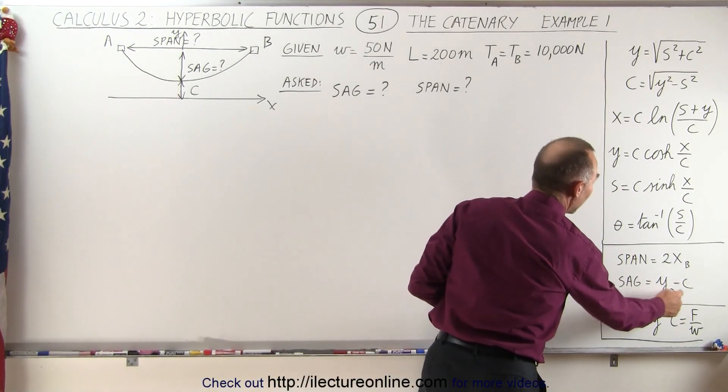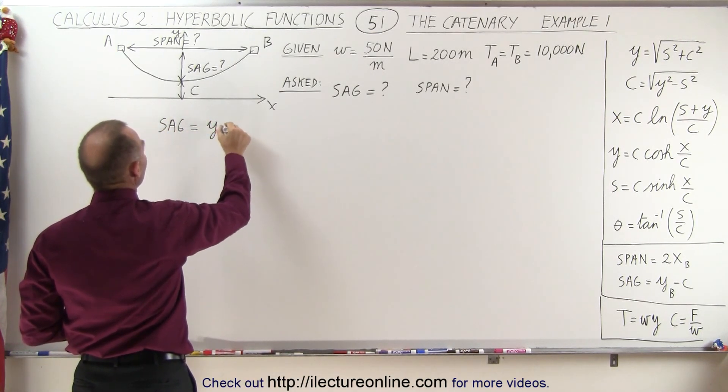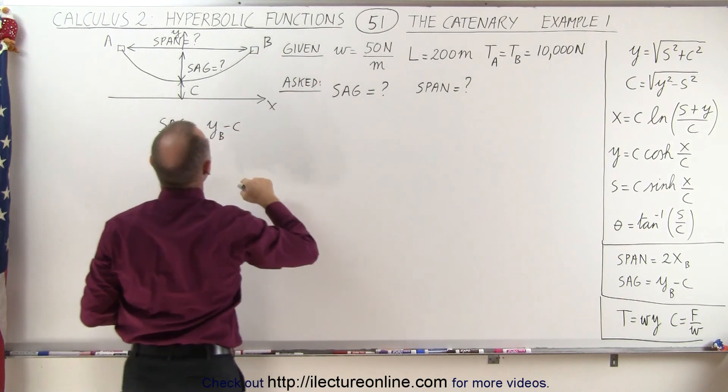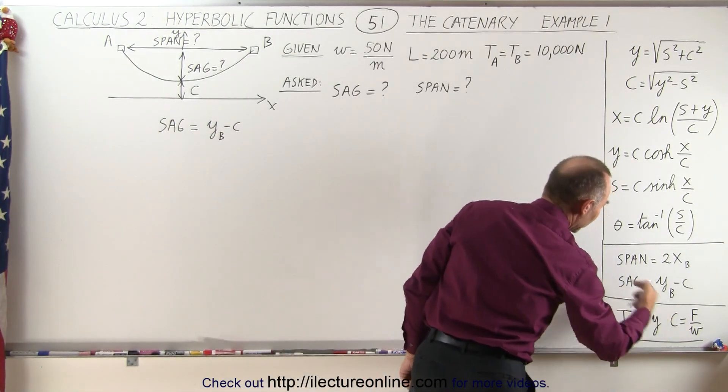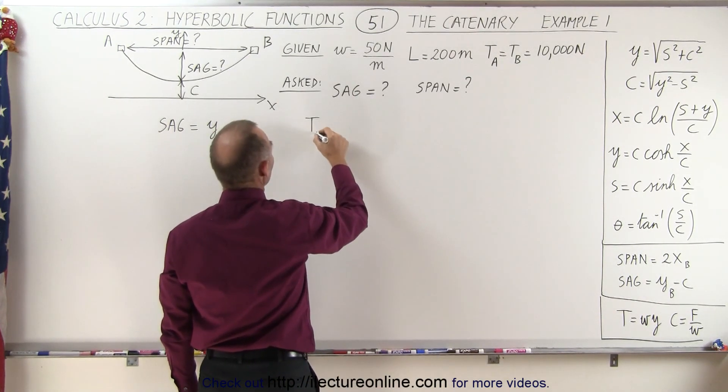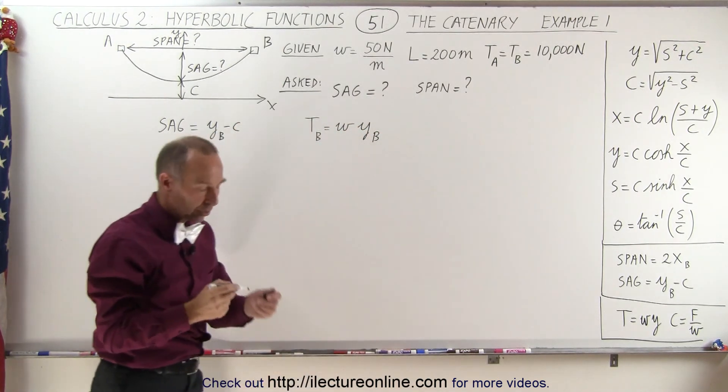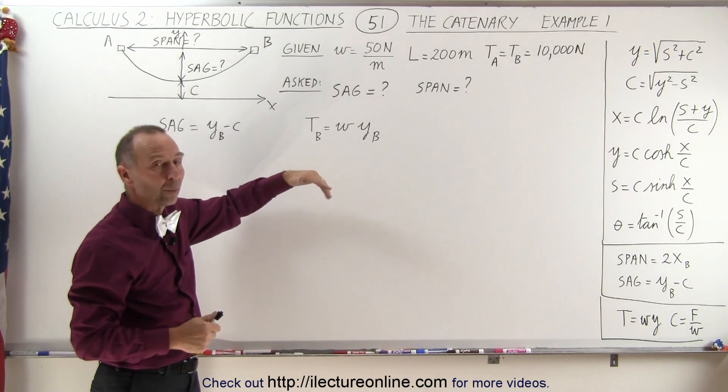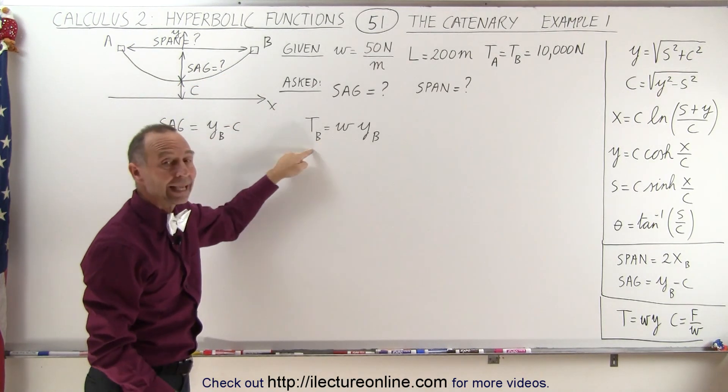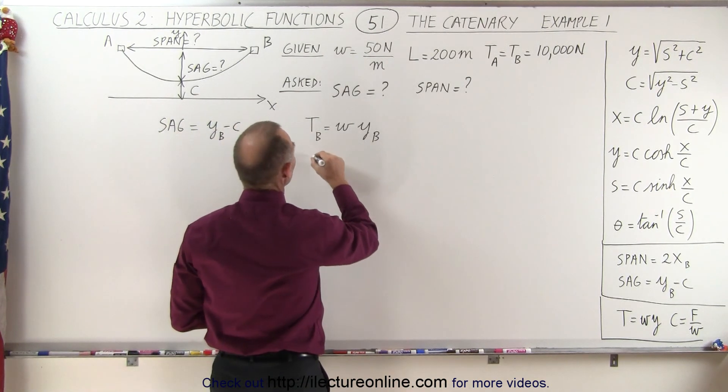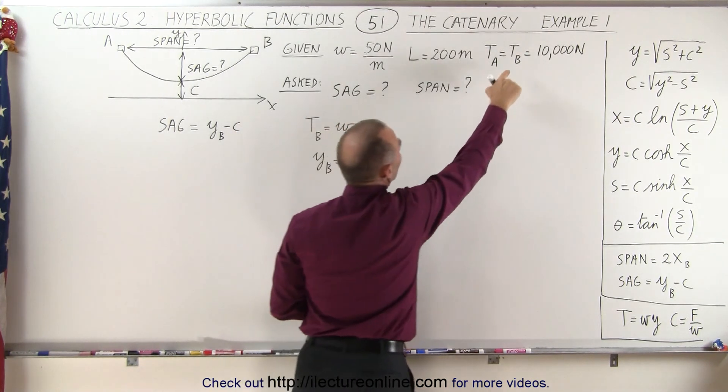So in order to find the sag, we need Y minus C. So we can say that sag is equal to Y at B minus C, which would be this distance right here, and so we're going to need C and we're going to need Y. Now over here we realize that Y can be obtained by using this equation, so we can say that T at B is equal to the weight per unit length times Y at B. T and B are the tension and the distance to the point where we find the tension anywhere along the cable. So we can solve for that at the endpoints right there.